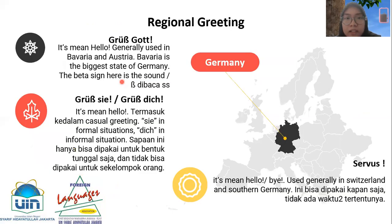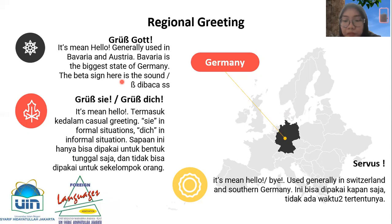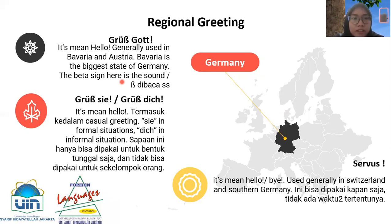Next are regional greetings. Just like in Indonesia, Germany also has different regions. There's 'Grüß Gott', which means 'hello', generally used in Bavaria and Austria. Bavaria is the biggest state of Germany. There is a special character called 'Eszett' (ß) which looks like a B but is read as a double-S. So 'Grüß Gott' means hello in German.